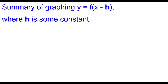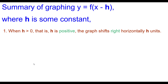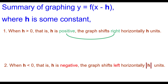Let's summarize graphing y equals f of the quantity x minus h, where h is some constant. When h is greater than 0 — h is a positive number — the graph shifts right horizontally h units. Positive means right. When h is less than 0 — h is a negative number — the graph shifts left horizontally the absolute value of h units. Negative means left.